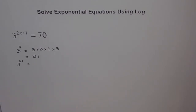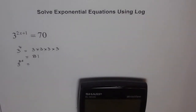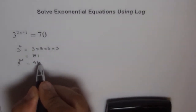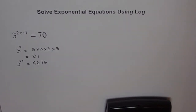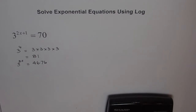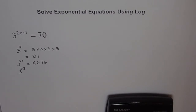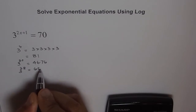We definitely need a calculator. Let's try to find the best value. 3 to the power of 3.5 gives me 46.76. That is much less than what we were expecting, so it has to be more. Let's try 3 to the power of 3.8, which gives me 65.022.